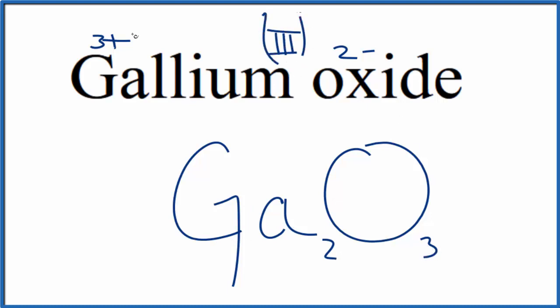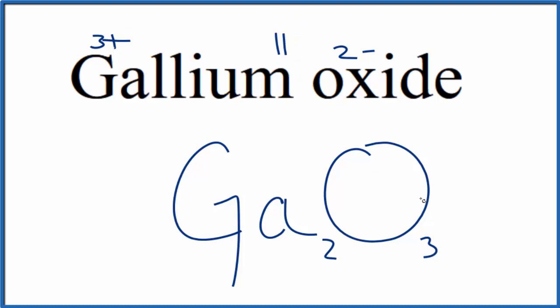So the formula for gallium oxide is Ga₂O₃. Again, sometimes you'll see the Roman numeral three in the name because of the three plus charge, or you'll hear it called gallium trioxide since there are three oxygen atoms. This is Dr. B — thanks for watching.